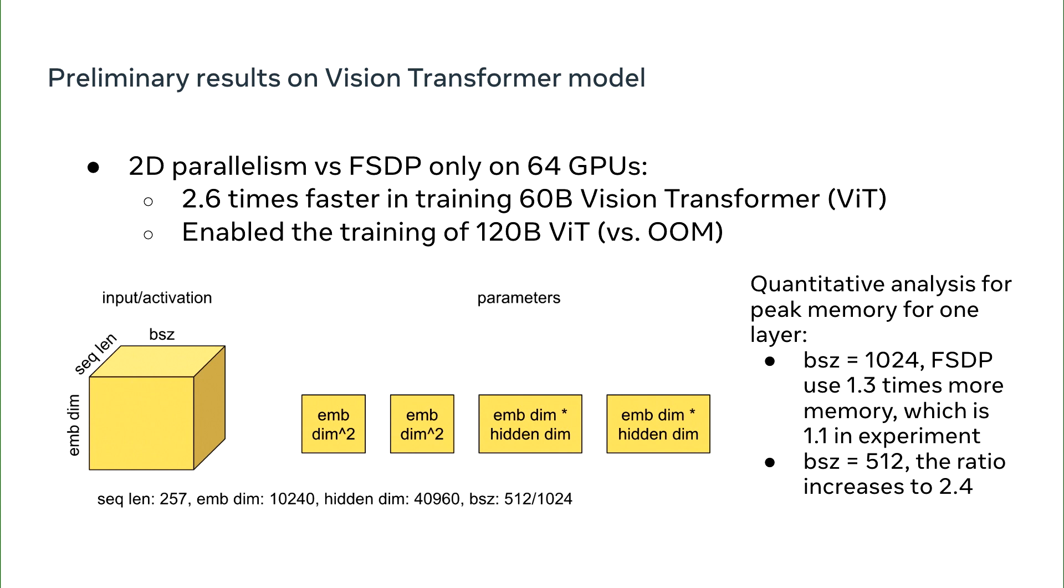Meanwhile, if we reduce the batch size to 512, this ratio increases to 2.4.